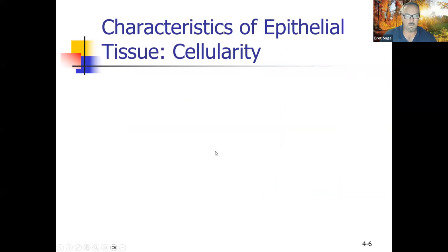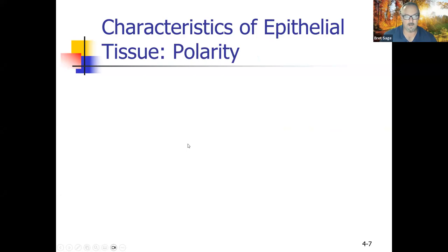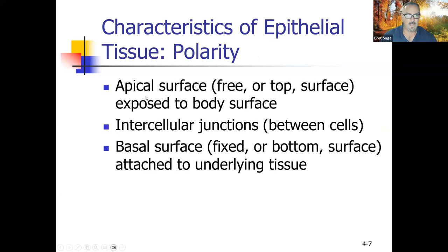Characteristics of epithelial tissue: cellularity — almost all of epithelial tissue is cells, not extracellular matrix, bound closely together by cell junctions with minimal extracellular matrix. Polarity means having an up end and a bottom end. The apical or free surface is always exposed to a body surface — even the inside of your digestive or respiratory tract. The basal surface is fixed and always attached to underlying tissue, usually a basement membrane.